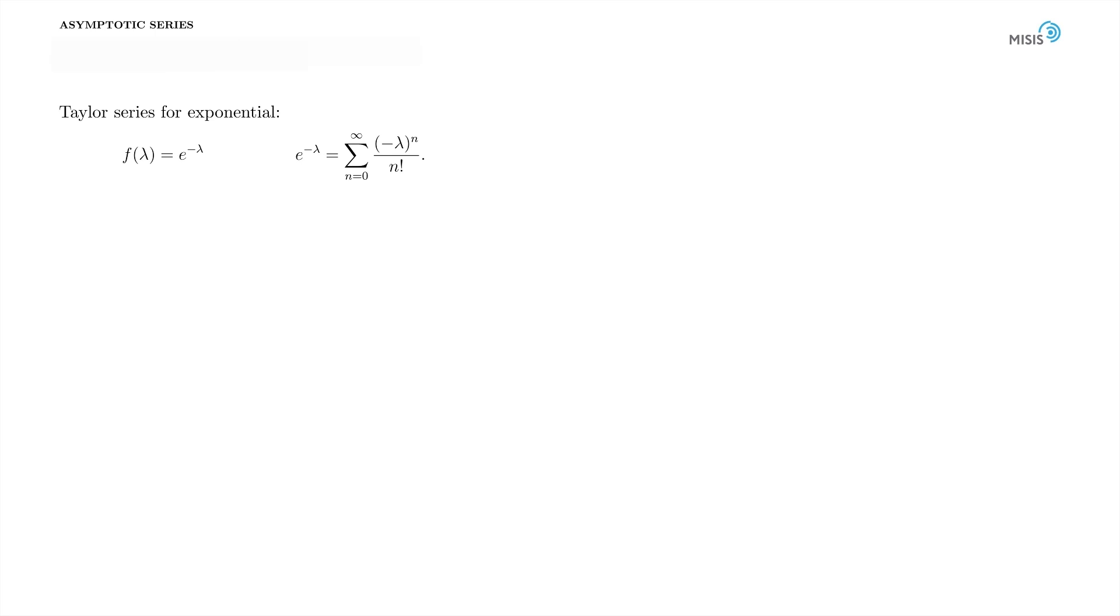It has a convergent at any lambda Taylor series expansion. Let's see how well the Taylor series approximates it. Let's take reasonably large lambda and build partial sums of the Taylor series. First, let's plot e to minus 10. So these are our axes. The horizontal line represents the number of terms in the Taylor partial sum. The vertical one is for the value of the partial sum itself.